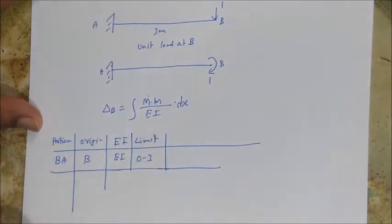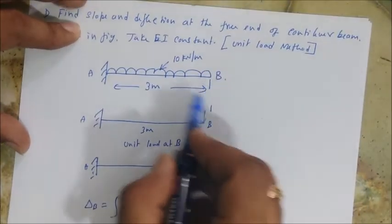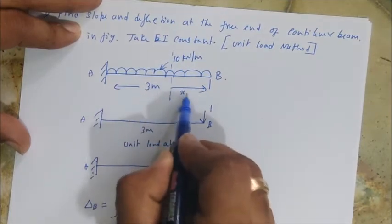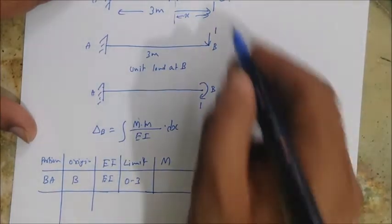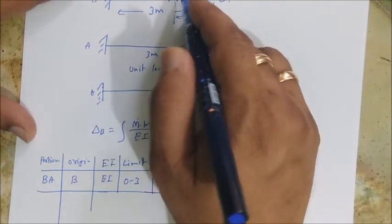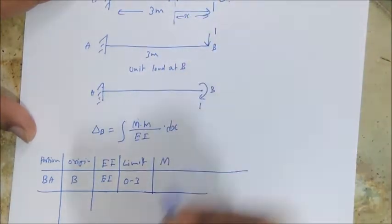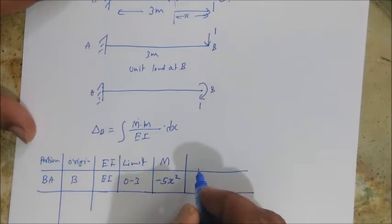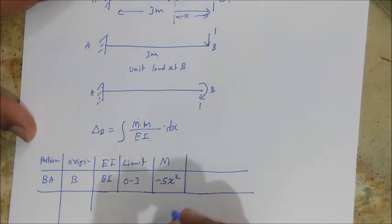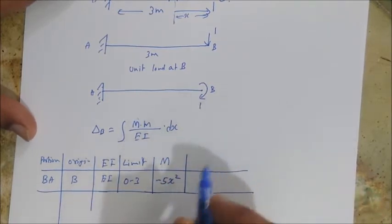Now M, capital M, bending moment at any distance X from B. Since it is UDL, it is 10 into X into X by 2, so it is 5X squared. I'll give a sign convention minus because it is hogging. For same procedures of Castigliano's and the strain energy, hogging is negative, sagging is positive. We'll be using the sign conventions.